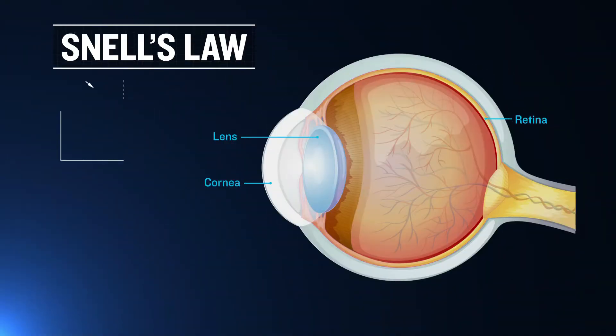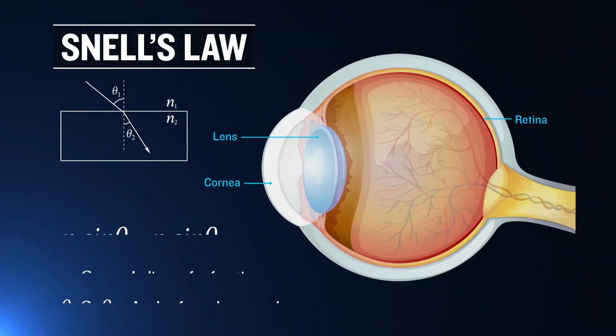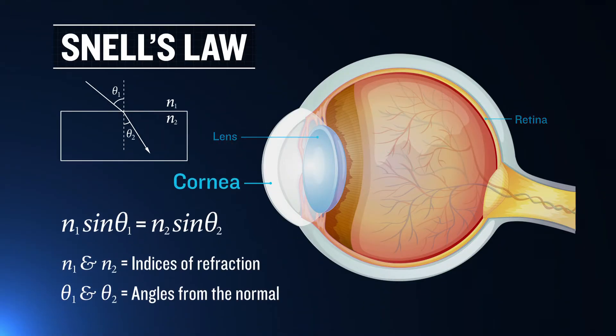80% of the refraction of light in our eyes occurs in the cornea. The angle that light is refracted can be computed using Snell's law.